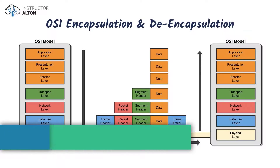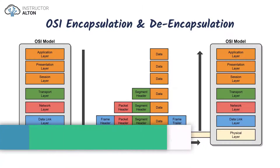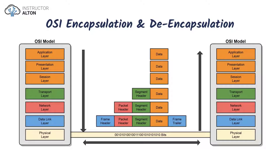Now that we've talked about all the different layers within the OSI model, I want to take it a step further and introduce encapsulation and decapsulation, and show you what types of headers and trailers get added on and stripped off of various pieces of data as they move up and down the OSI model.